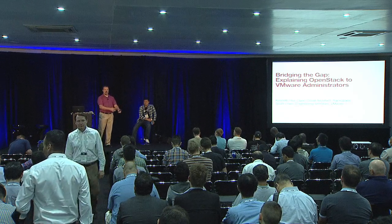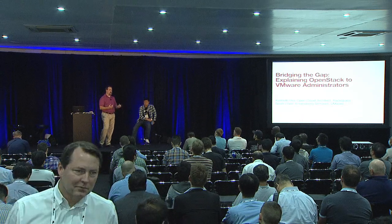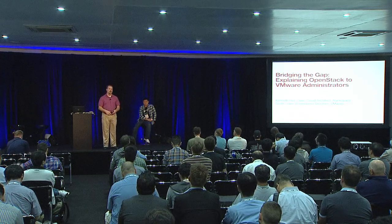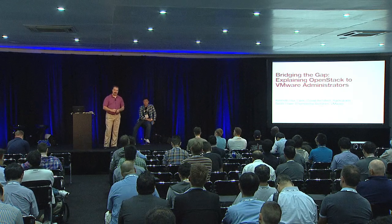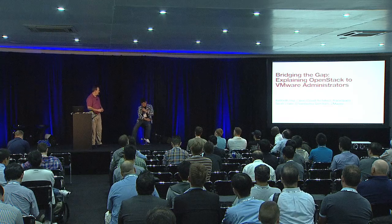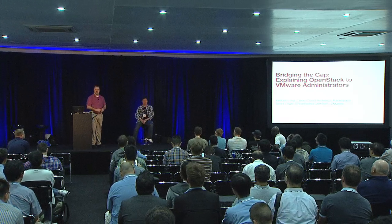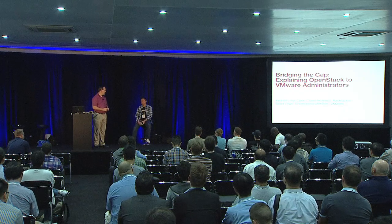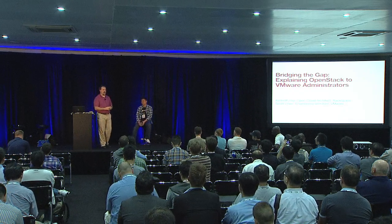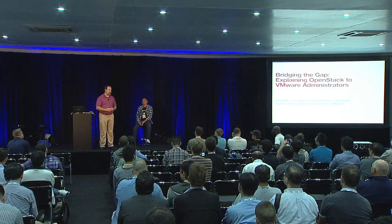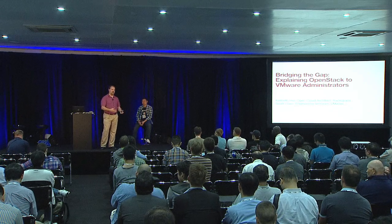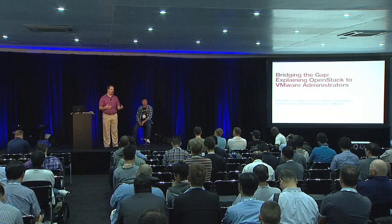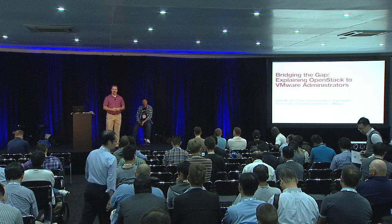My name is Scott Lowe. I work for VMware in the network and security business unit and am a member of the OpenStack team at VMware, responsible for driving VMware integration with and support of OpenStack. My co-presenter is Ken Hoy, who works at Rackspace and prior to that worked for a company focused on VMware. Neither Ken nor I will claim to be OpenStack experts — we both have a long history in the vSphere space, which we think helps provide this kind of mapping.